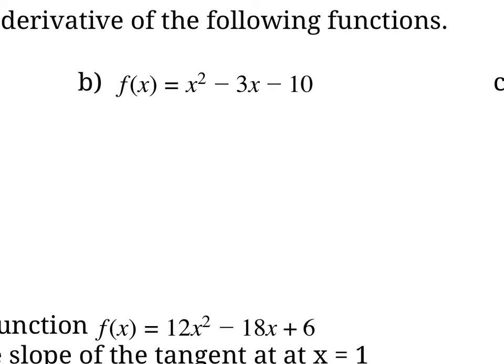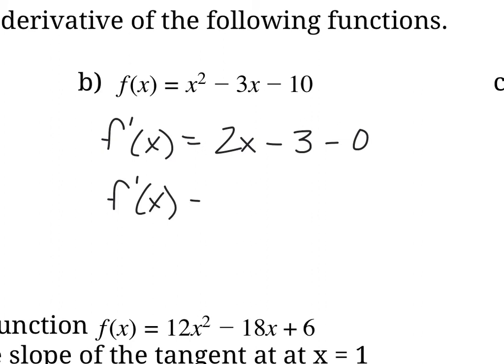For this quadratic, to find f prime of x we take the derivative of the three parts separately. The derivative of x squared is 2x, the derivative of negative 3x is negative 3, and the 10 goes away because it's a constant. So f prime of x equals 2x minus 3.